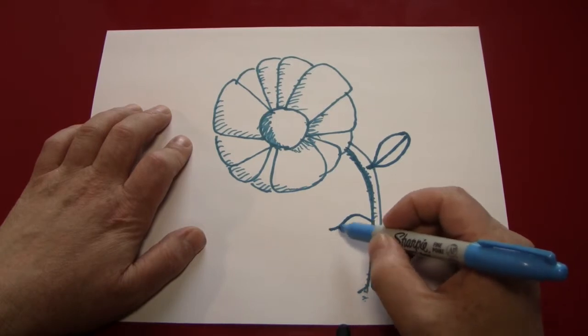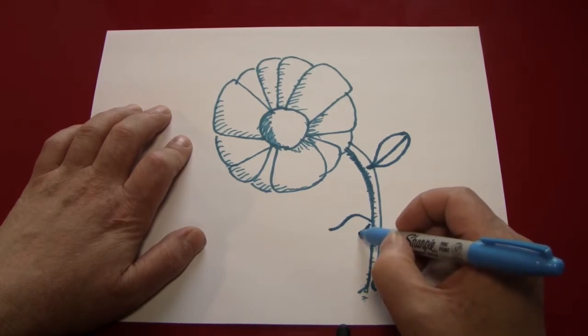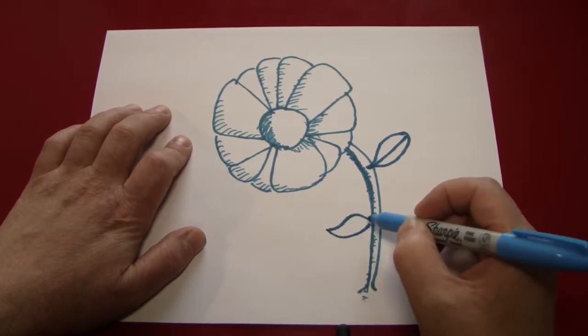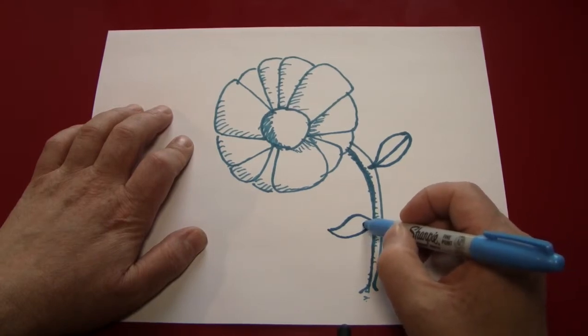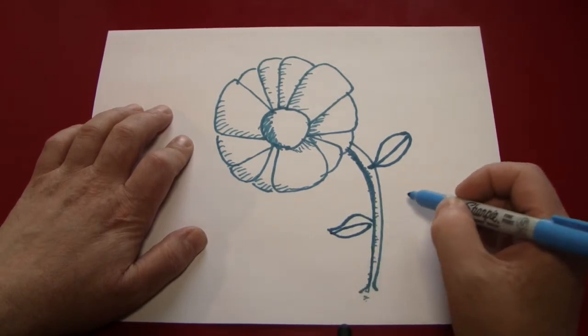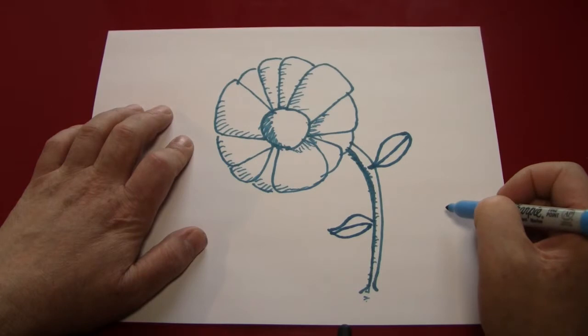And then repeating the process for every leaf you want to make. Make that flattened out S with a little point, make that curved line that comes up and meets it at the end, and then put a little line down the middle. And you have a leaf.